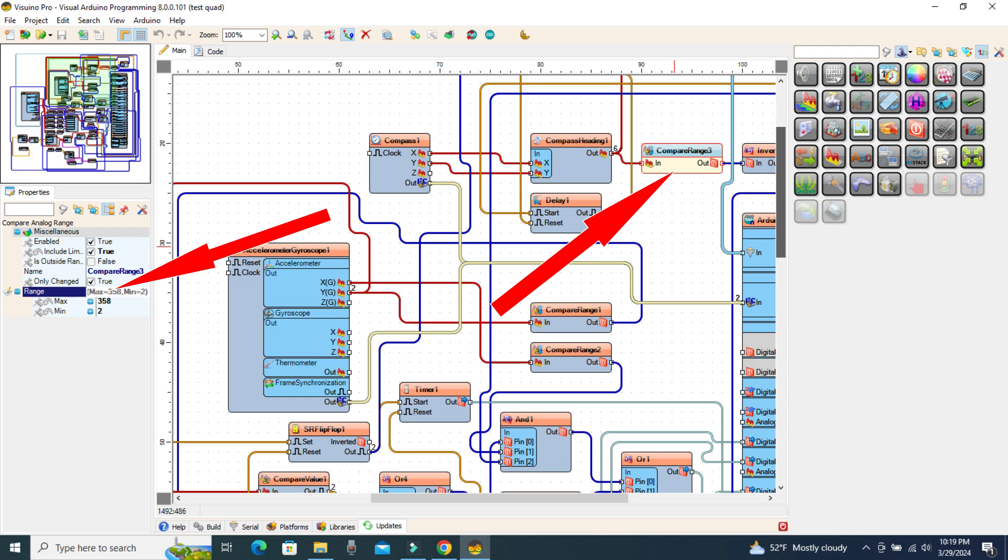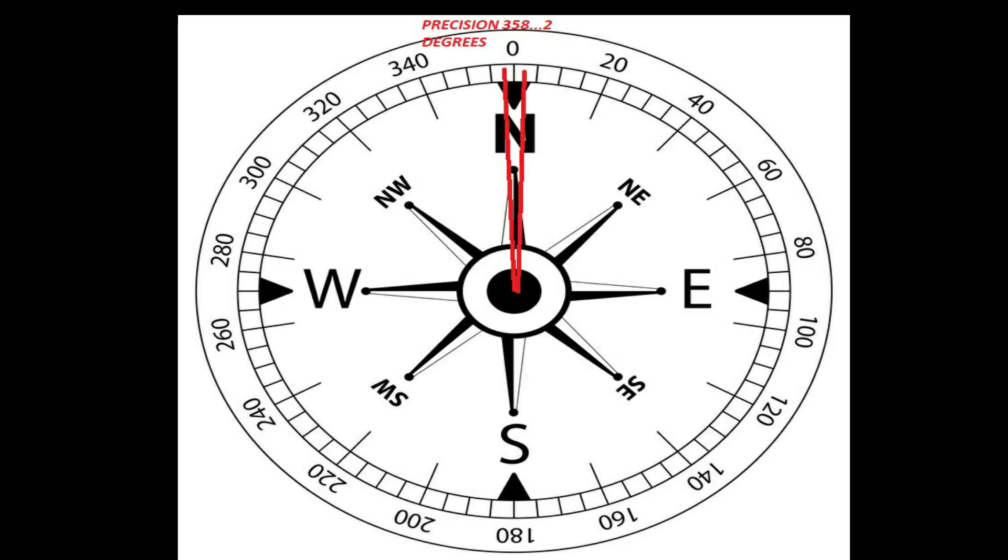The Compare Analog Range component establishes the accuracy of the device. It is set to a value from 2 to 358 degrees. As long as the device is positioned between these values, the blue LED will light up permanently. You can increase the precision to one degree, changing with a minimum of one and a maximum of 359 degrees, but it will be more difficult to handle.